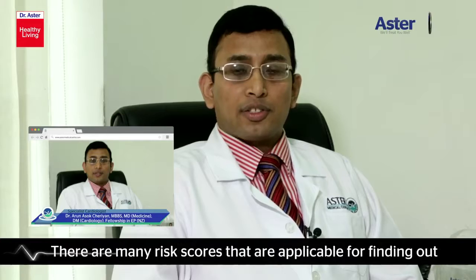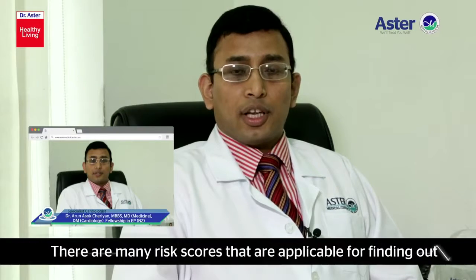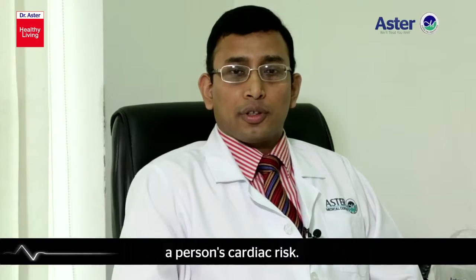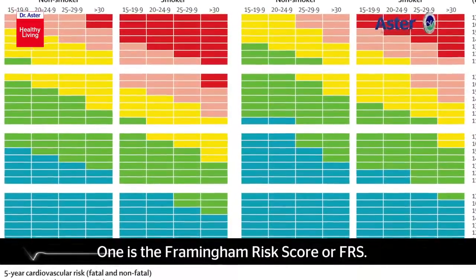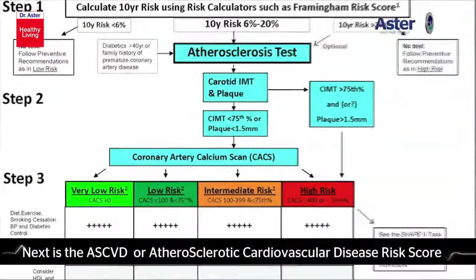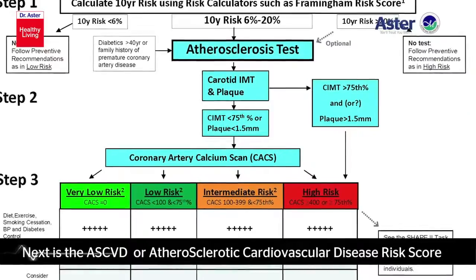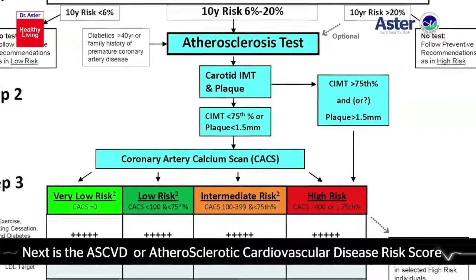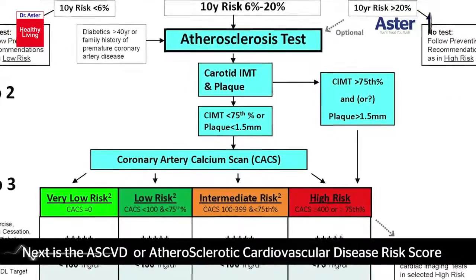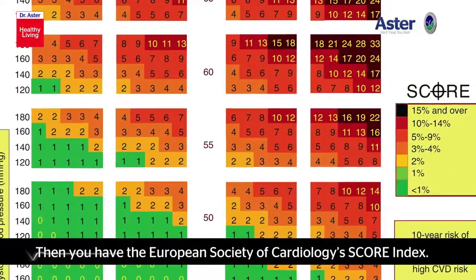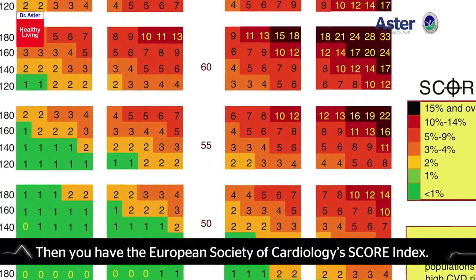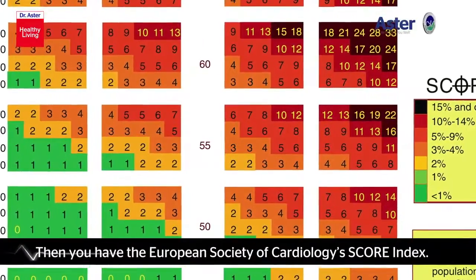There are many risk scores that are applicable for finding out a person's cardiac risk. One is the Framingham risk score or FRS. Next is the ASCVD or atherosclerotic cardiovascular disease score from the American Heart Association. Then you have the European Society of Cardiology's score index.